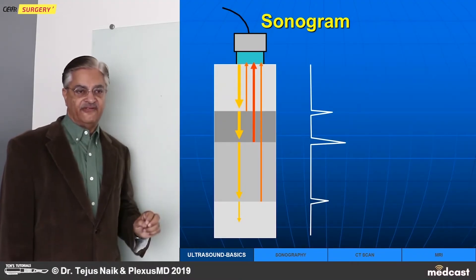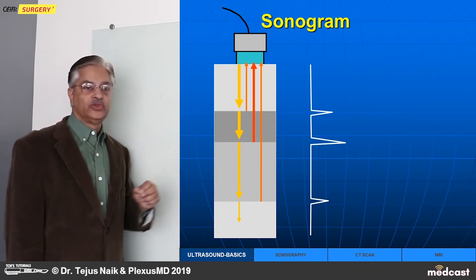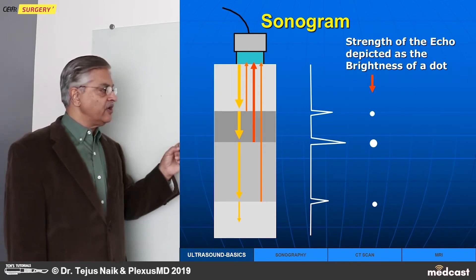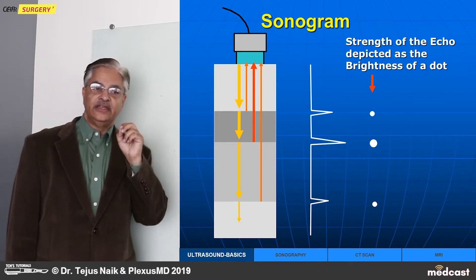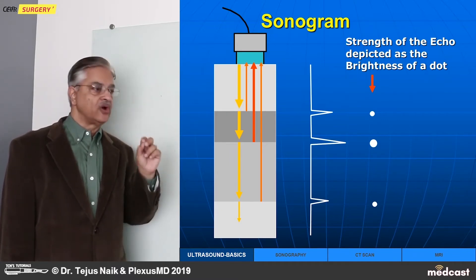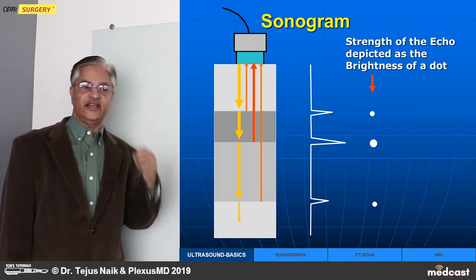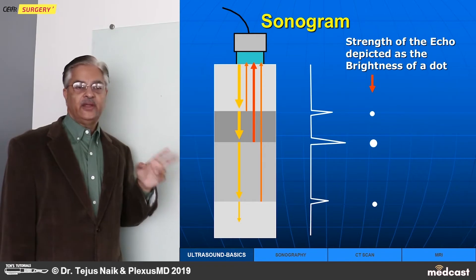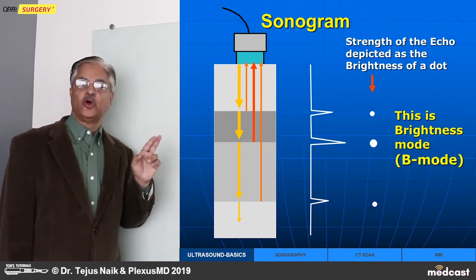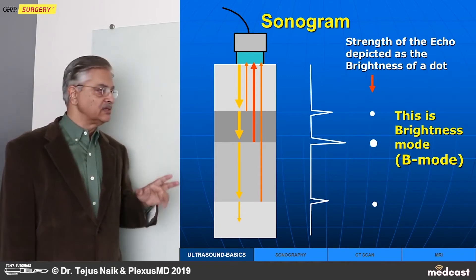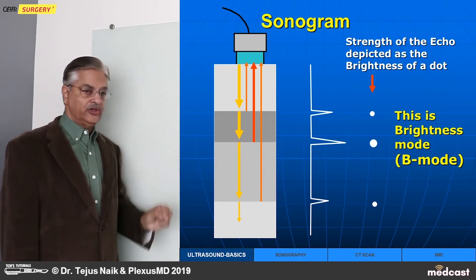We had a graph when we had one ray of sound. How can we turn it into three-dimensional? Instead of showing this graph as peaks, we show the echoes as intensity or brightness of dots. If the echo is strong, it is very bright; if it is weak, it is less bright. We are depicting the echoes by brightness of the dots, so this is called B-mode. This is the most vastly used type of sonogram. Now instead of a graph, we have dots in one line.